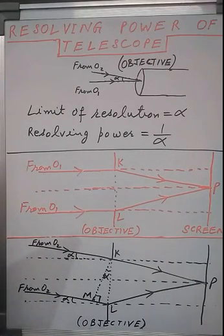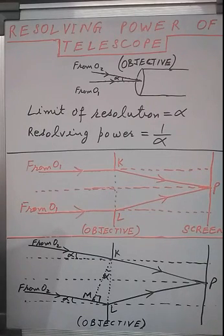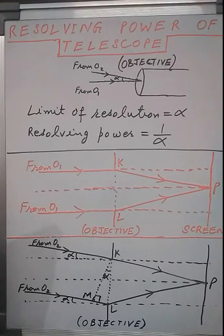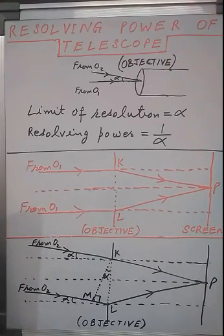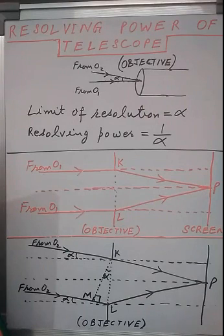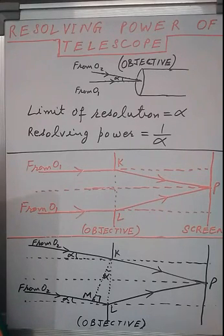Quantitatively, resolving power of a telescope is defined as the reciprocal of its limit of resolution. Limit of resolution is the minimum angle that must be subtended at the objective of the telescope by two closely lying objects such that images shown by the telescope are seen just resolved.